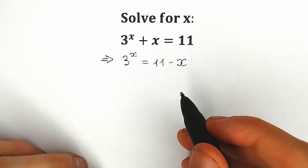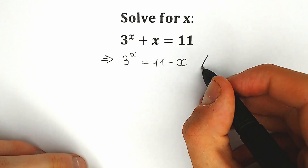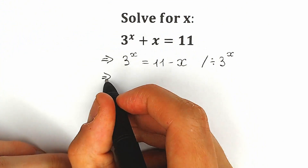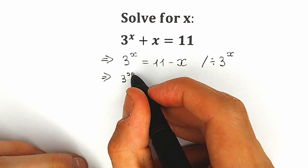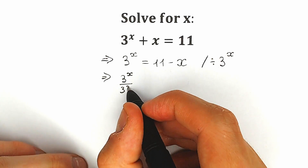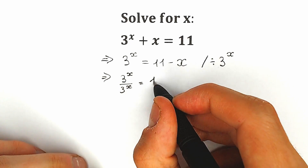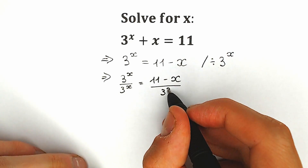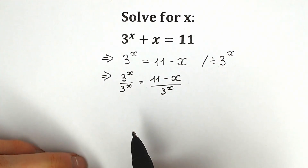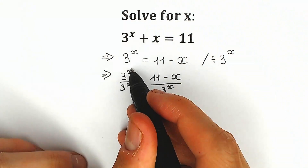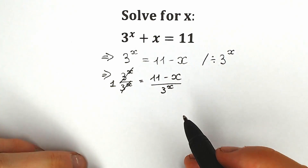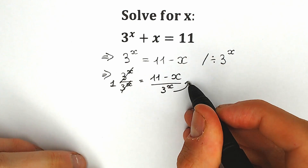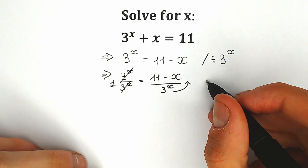What are we going to do next? We're going to divide both sides by 3 to the power x. As a result, on the left side we have 3 to the x over 3 to the x, equal to (11 minus x) divided by 3 to the power x. If you look closely on the left side, we can easily cancel 3 to the power x, leaving only 1. And on the right side, we can write 3 to the x in the numerator using an important property.